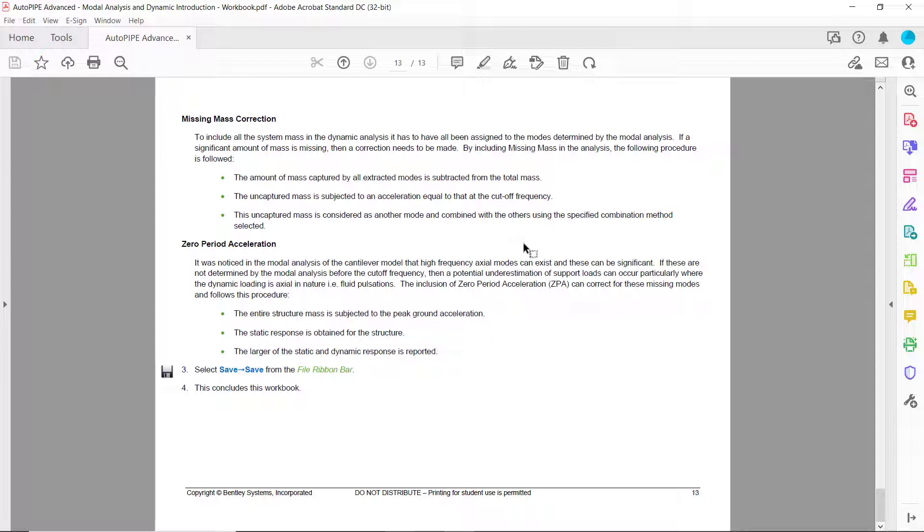So by including missing mass in the analysis, this is the procedure that's followed. The amount of mass captured by all extracted modes is subtracted from the total mass. The uncaptured mass is subjected to an acceleration equal to that at the cutoff frequency. And the uncaptured mass is considered as another mode and then combined with the other modes using the specified combination method selected.